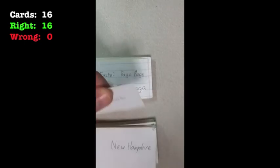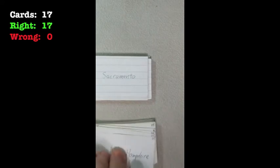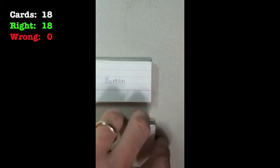Then Sacramento, California. Concord, New Hampshire. I like the grape jelly. That's my favorite. Boston, Massachusetts. Honolulu, Hawaii. Augusta, Maine.